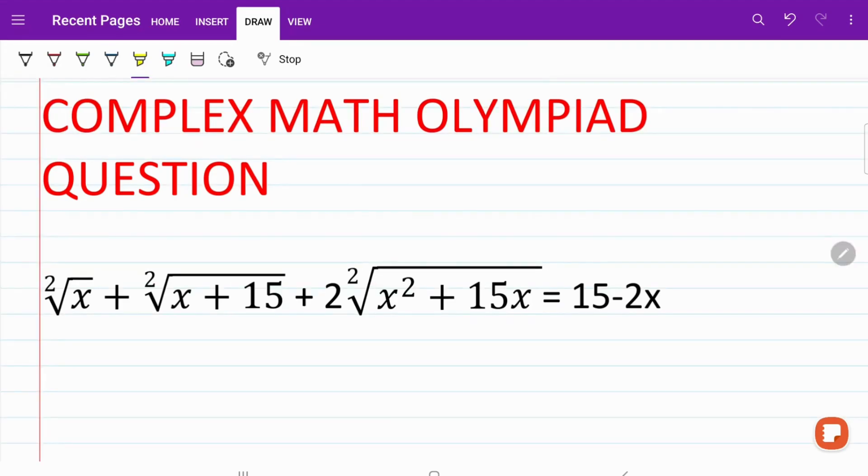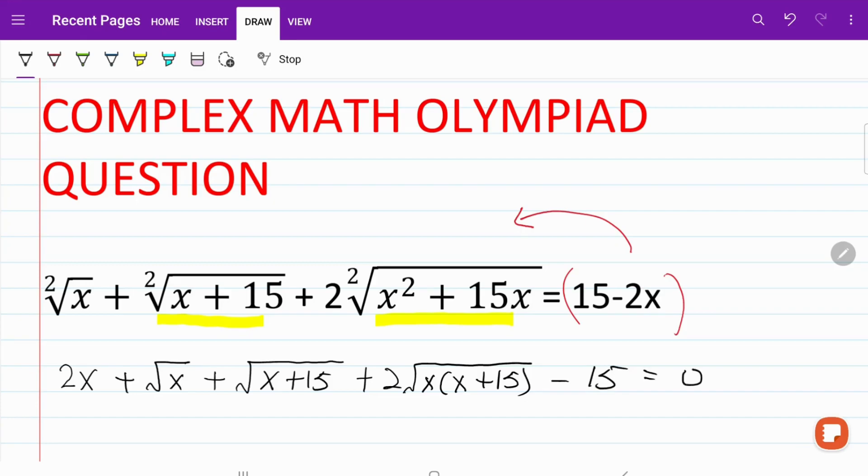When we look at this equation, the first thing we notice is that x plus 15 is a fairly common component on the left-hand side. And also, we are going to move everything from the right-hand side to the left. So, let's write everything down. Now, I have 2x plus square root of x plus square root of x plus 15 plus 2 square root of x multiplied by x plus 15 minus 15 is equal to 0.